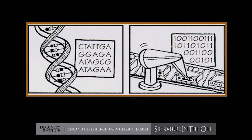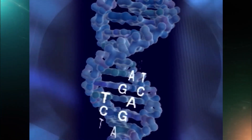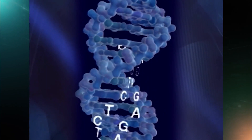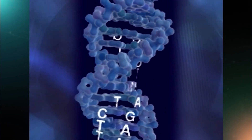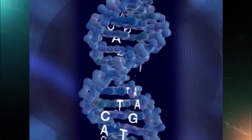What gives those parts of the DNA and the DNA molecule as a whole its function — its ability to direct the construction of proteins — is not anything about the physical properties of the chemical parts of DNA per se, but rather their specific arrangement in accord with an independent symbol convention, which was later discovered and is now known as the genetic code.